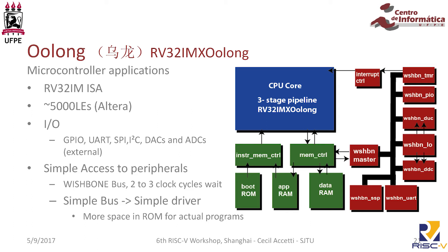We designed our first core and called it Oolong — I used to drink a lot of Oolong tea. We needed integer and multiplication extensions, targeting less than 5,000 logic elements for the target FPGA. We focused on IO, so we had to deliver GPIO, UART, SPI, and all the protocols, plus interfacing for analog-to-digital converters and digital-to-analog converters. Since we focused on simple access, we don't have much memory, so drivers should be simple. We decided to use the Wishbone bus, which gives two-to-three clock cycle access, and the drivers were small enough to fit the limited FPGA.